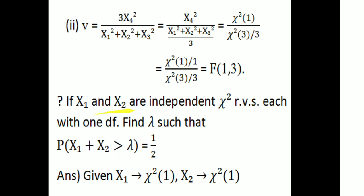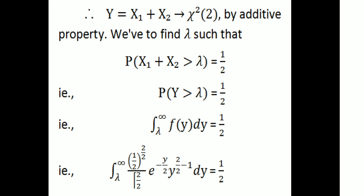Next question: if x₁ and x₂ are independent chi-square random variables each with 1 degree of freedom, find λ such that P(x₁ + x₂ > λ) = 1/2. By the additive property, x₁ + x₂ = y follows chi-square(2). So P(y > λ) = 1/2, which equals the integral from λ to ∞ of f(y) dy = 1/2.